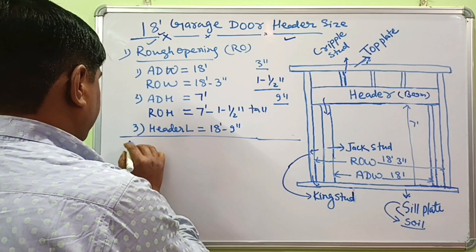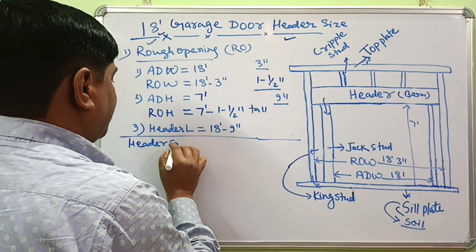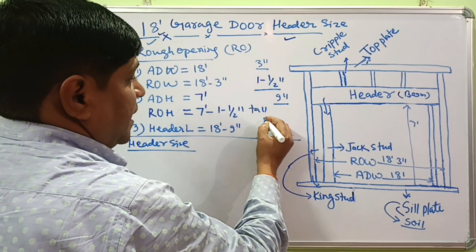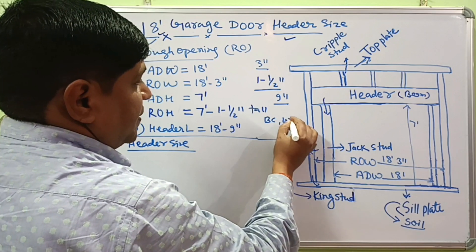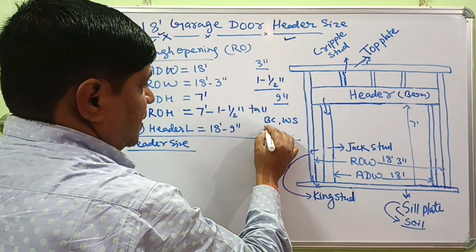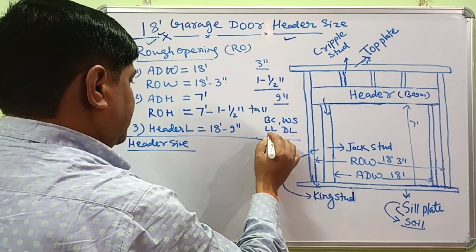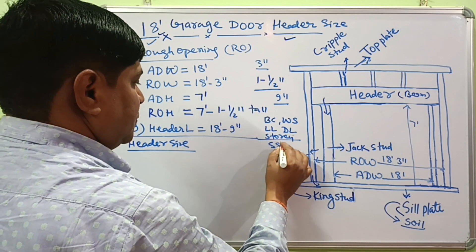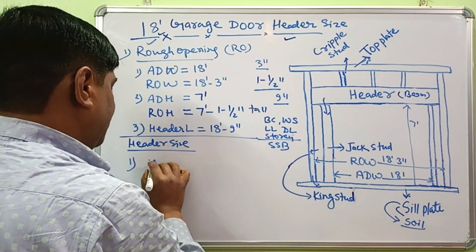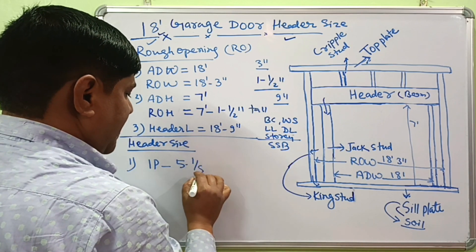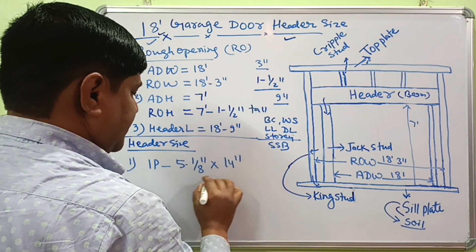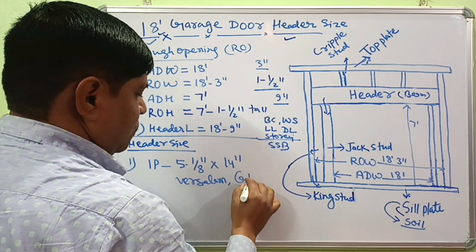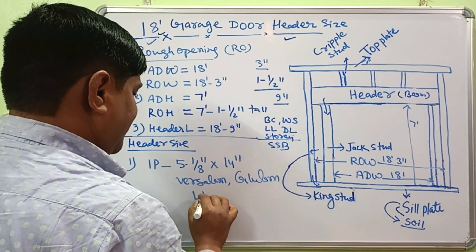Now we can find the header size required for installation of an 18-foot garage door. Header size depends on building code, wood species used for framing, live load and dead load, and how many storeys the building has. For a single-storey building, our suggestion is to use one piece of 5-1/8 inches by 14 inches, or a long laminated beam.